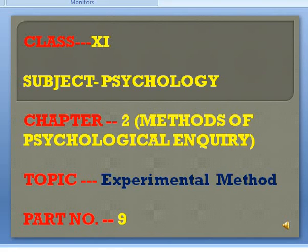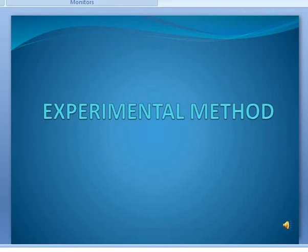Good morning everyone, welcome back after summer break. Before summer break we were discussing Chapter 2: Methods of Psychological Inquiry. In that, we were doing the experimental method, and we have already discussed independent variable, dependent variable, extraneous variable, and control variable. Today we will briefly revisit all these variables before moving further.